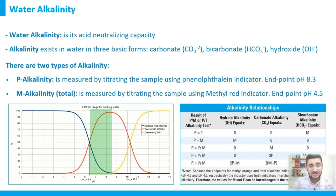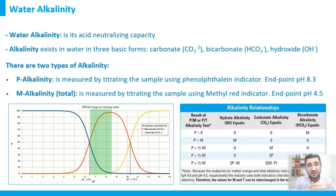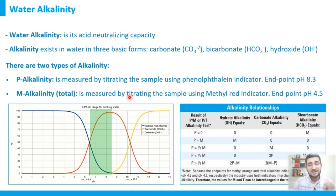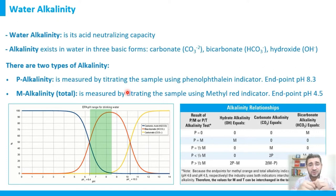There are two types of alkalinity that can exist in water. The first is called P-alkalinity, where P stands for phenolphthalein, which is the indicator used for the analysis of this alkalinity. P-alkalinity is measured using phenolphthalein color indicator, which has an endpoint at approximately pH 8.2 to 8.3.